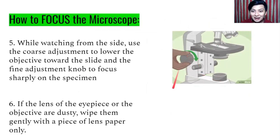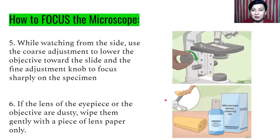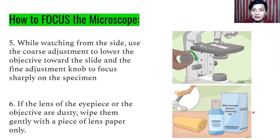Step six: if the lenses of the eyepiece or the objective are dusty, wipe them gently with a piece of lens paper only, or use a proper lens cleaning material. Be careful because there are scratches that can harm your eyepiece or objective lenses.